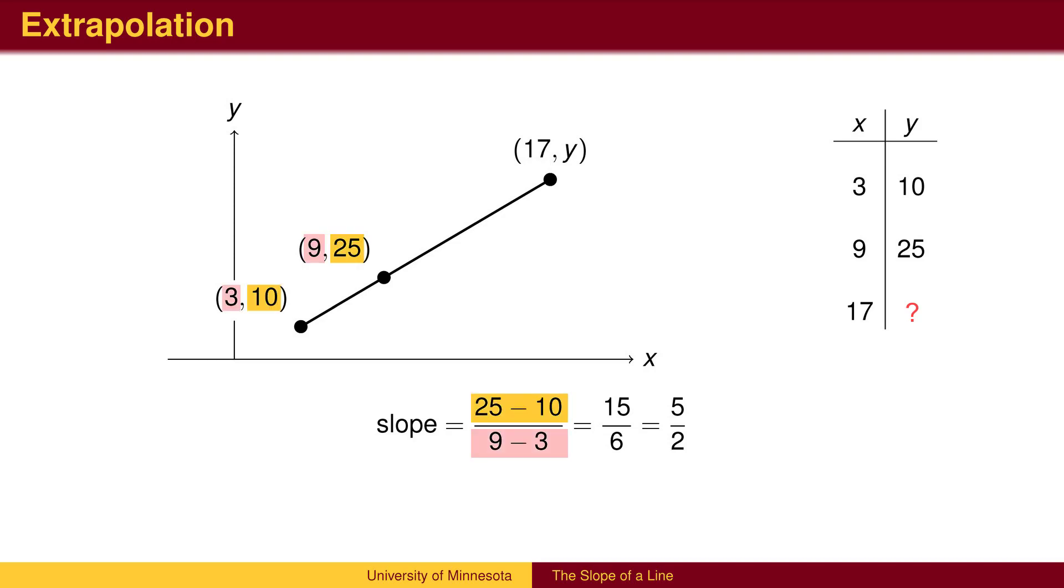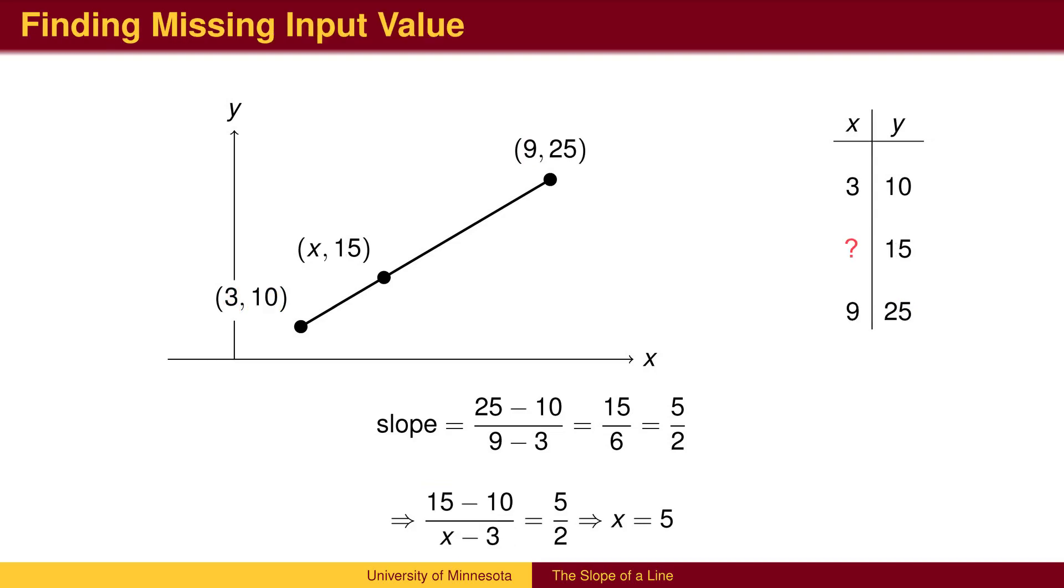First, find the slope using the two known points. Then, use the slope plus one of the known points with a new point and solve for y. We can also find a missing x value using the same technique.